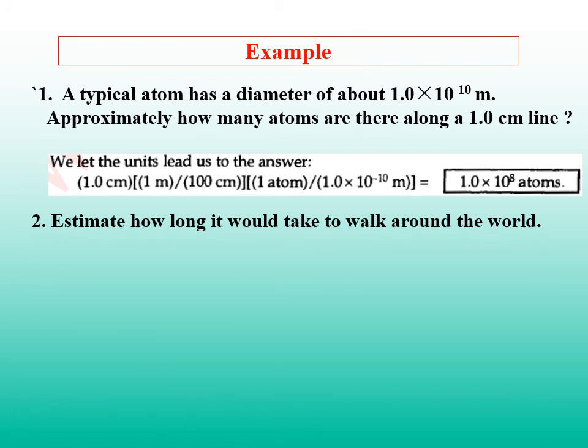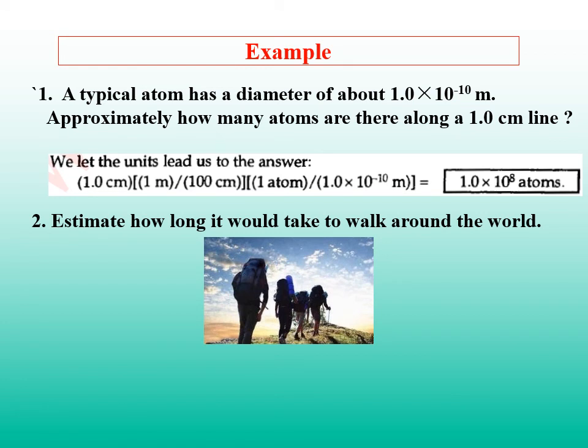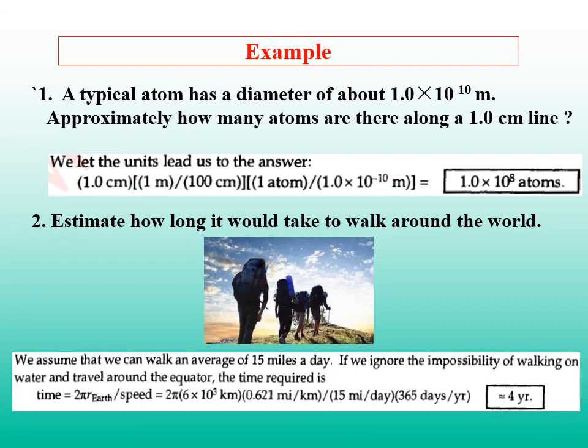2. Estimate how long it would take to walk around the world. The radius of the earth is about 6,000 kilometers. Assume we travel along the equator, and we can walk an average of 15 miles a day. Then, the time it would take to walk around the world is about 4 years. The world is so wonderful that you energetic young people always have the impulse to decide to walk around the world. By this rough estimation, you can imagine how long your hair and your beard might be after you were back 4 years later.